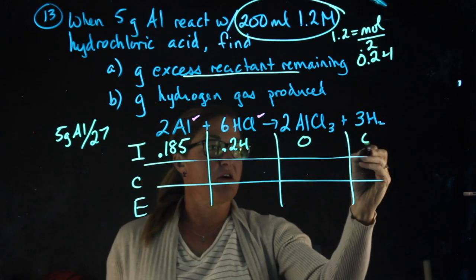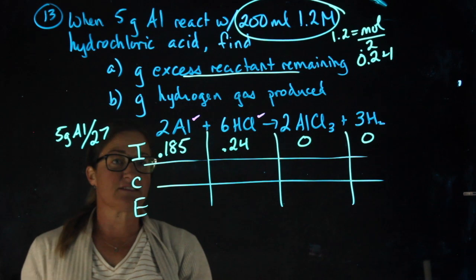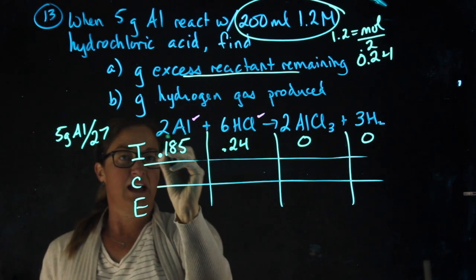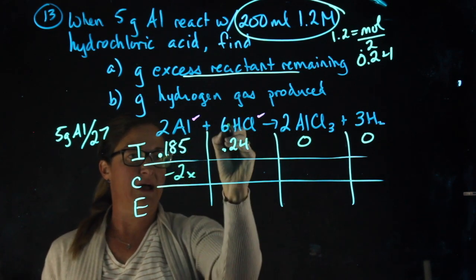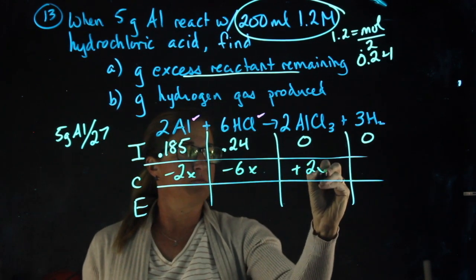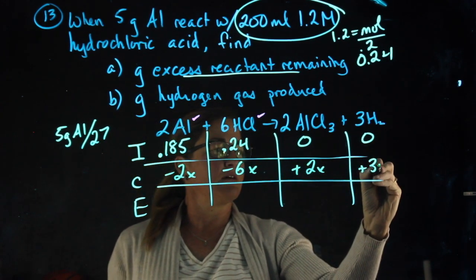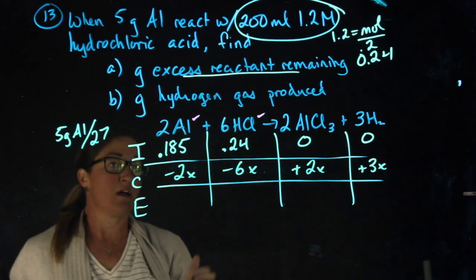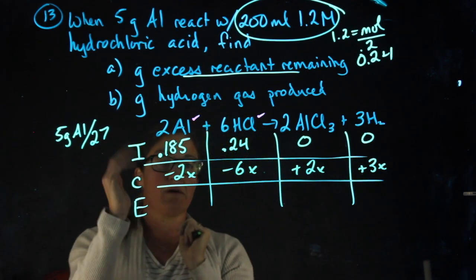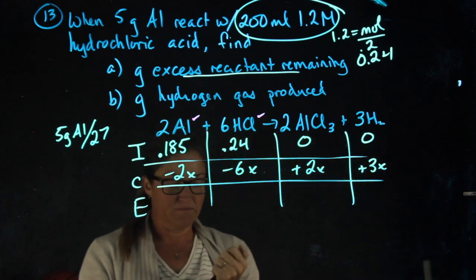These each start at zero. My next step is to fill in the x's. Since I have a coefficient of 2: minus 2x, minus 6x, plus 2x, plus 3x. The left side of the reaction in the limiting reactant problem is going to decrease; the right side is going to increase.